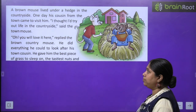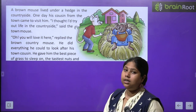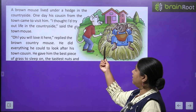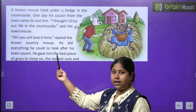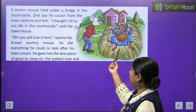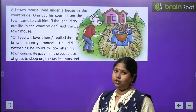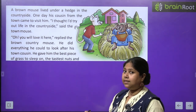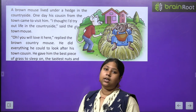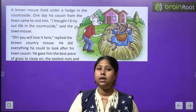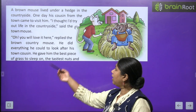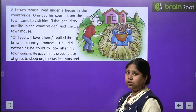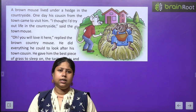Aaj hum Aesop ki ek kahaani parh rahe hain jo ek mouse ki story hai. Let's begin. A brown mouse lived under a hedge in the countryside — ek brown color ka chuha countryside mein ek hedge ke neeche rehta tha. One day his cousin from the town came to visit him — jaise hamare cousins hamare milne aate hain, usi tarah is chuhe ka bhi ek cousin sheher se usse milne aaya. The town mouse said, 'I thought I would try out life in the countryside.'